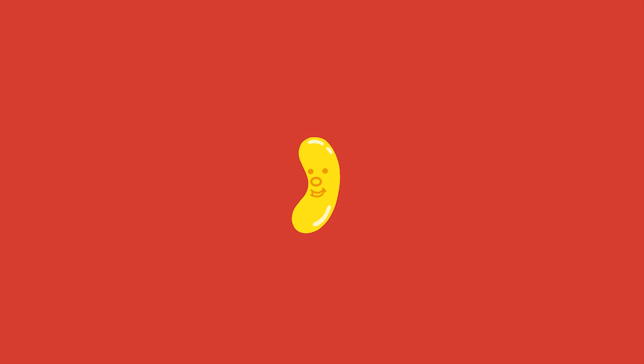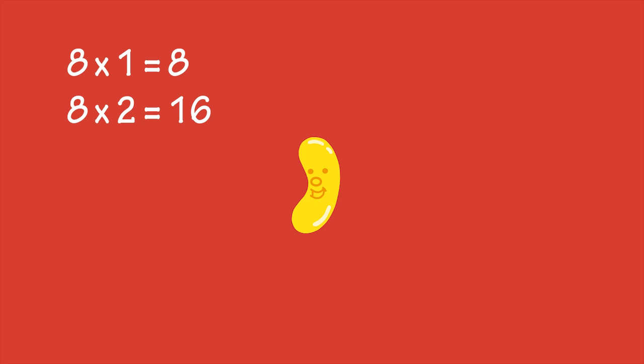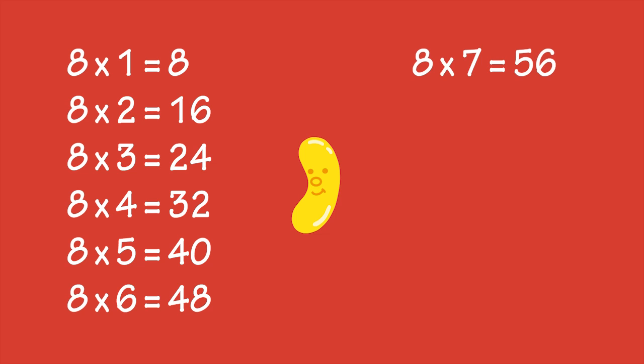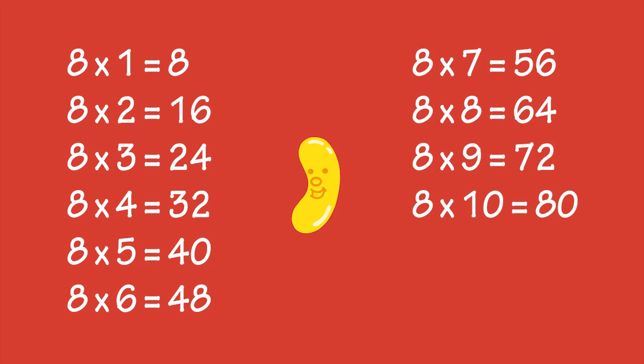If you can do skip counting, it makes learning the times tables easier. Skip counting by 8s and the 8 times table both involve counting in multiples of 8.